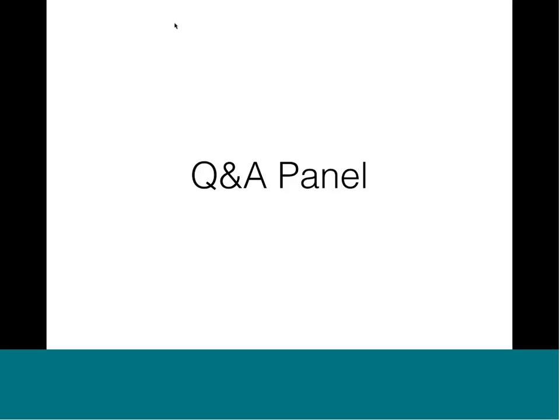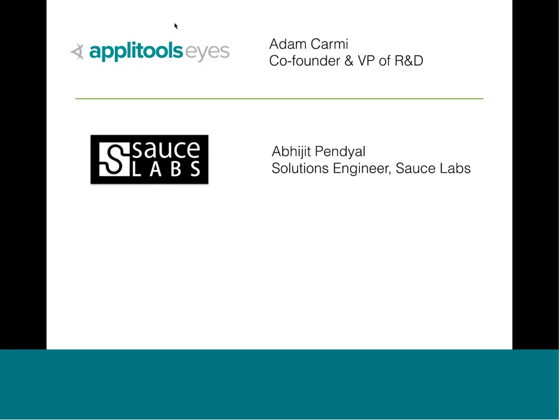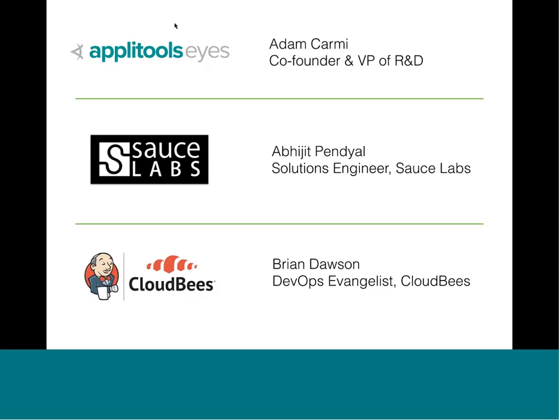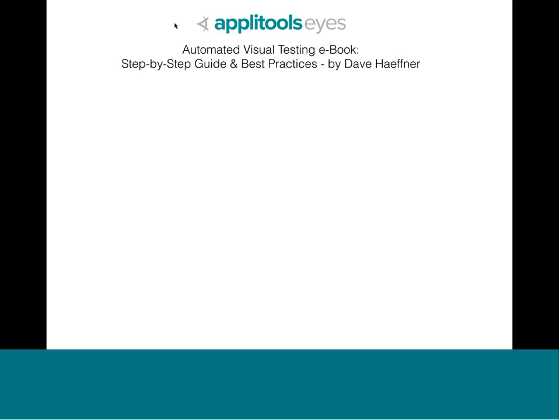Act four: Q&A panel. I want to introduce the people on the panel. From Applitools Eyes, we have Adam Carmey, co-founder and VP of R&D. At Sauce Labs, we have Abhijit Pandial, solutions engineer. And from CloudBees, we've got Brian Dawson, the DevOps evangelist. Before we dig into questions, each of these companies is offering something free — Applitools has an e-book on best practices for automated visual testing, Sauce Labs is offering a free 14-day trial with 8 virtual machines and 90 browser hours, and CloudBees has an e-book on making the shift from CI to CD.